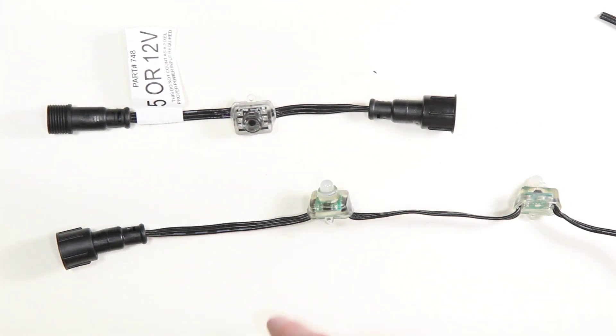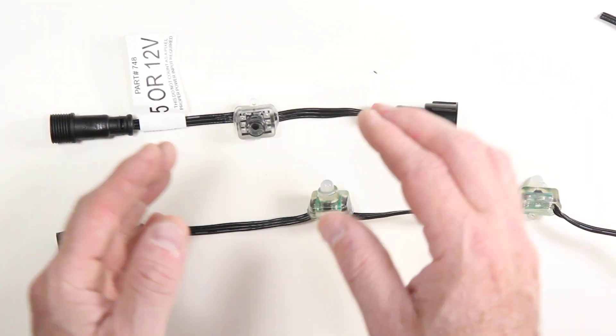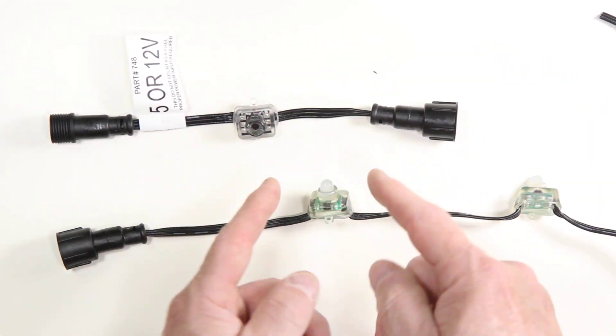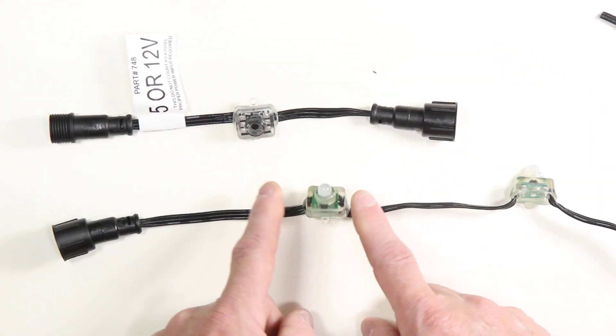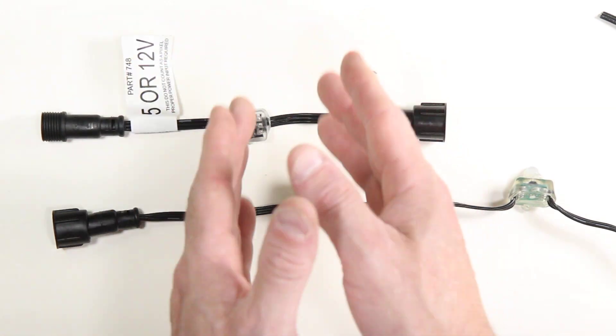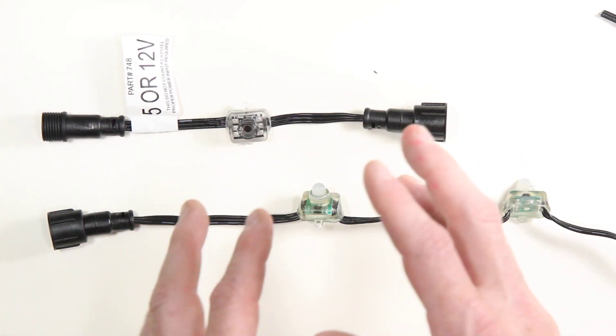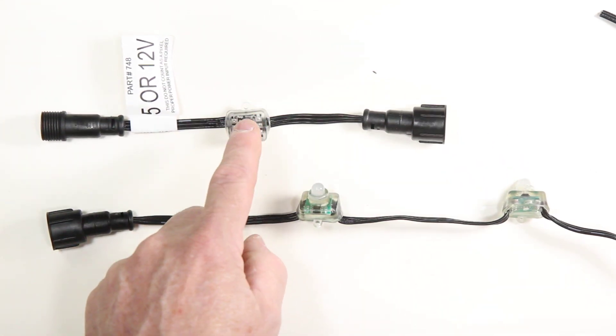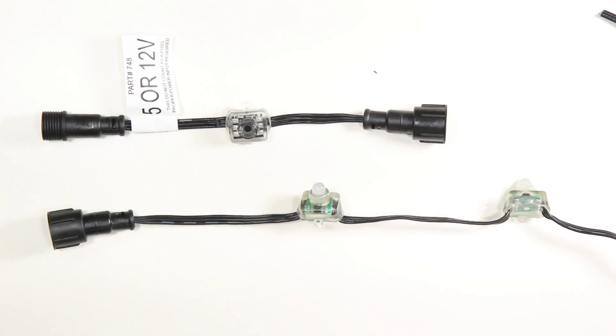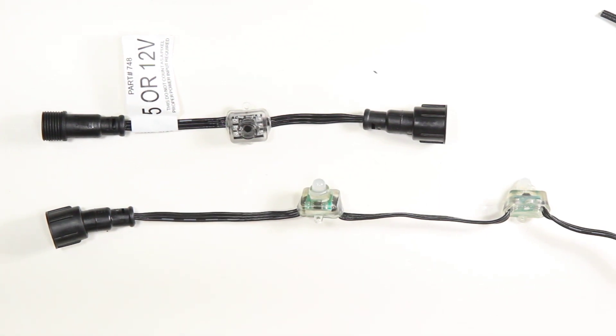Typically you would have this either at the beginning because it does boost the signal higher than a normal pixel, at the beginning or middle of the signal. Sometimes, depending upon the level of quality of the signal, sometimes you actually can even put this at the end of a line right before a pixel.